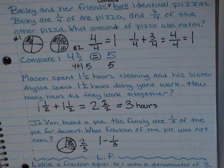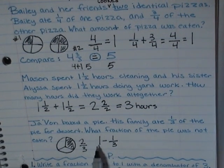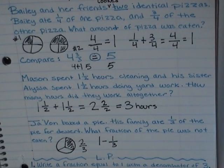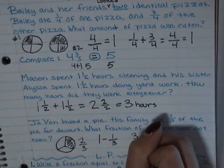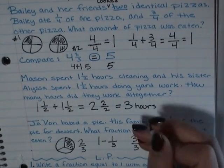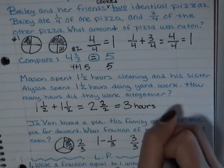So what should I change this one into to make this problem work? Hmm. What number is equal to one that also has a denominator of three? If you said three thirds, then you are correct.